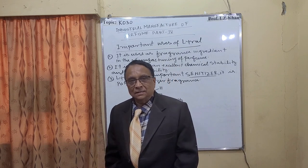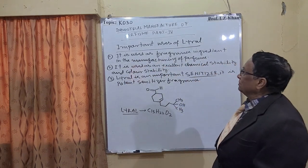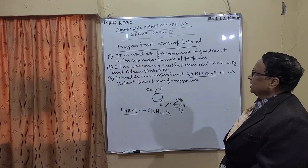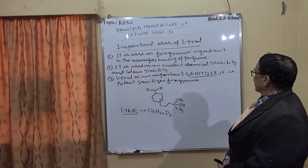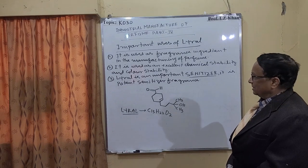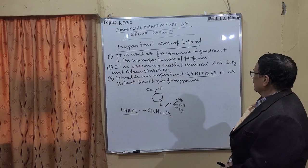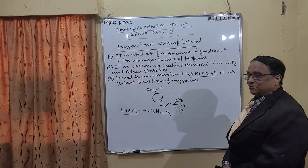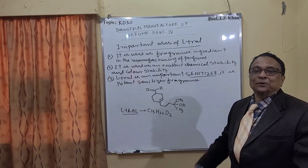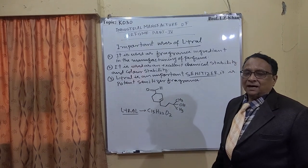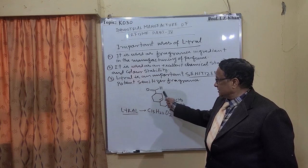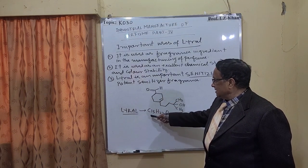Regarding Lyral's structure and chemical formula: number one, it is used as a fragrance ingredient in the manufacturing of perfume. Number two, it provides excellent chemical stability and color stability in any perfume. Number three, Lyral is a most important sanitizer ingredient - it is a potent sanitizer fragrance. Whenever we are preparing any sanitizer, Lyral is a must. Without Lyral we cannot prepare sanitizer, and its combination with solvent - with alcohol - gives you a ready sanitizer. Its molecular formula is C13H22O2.